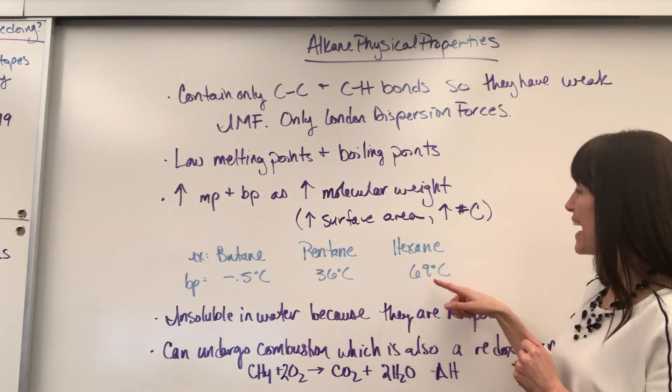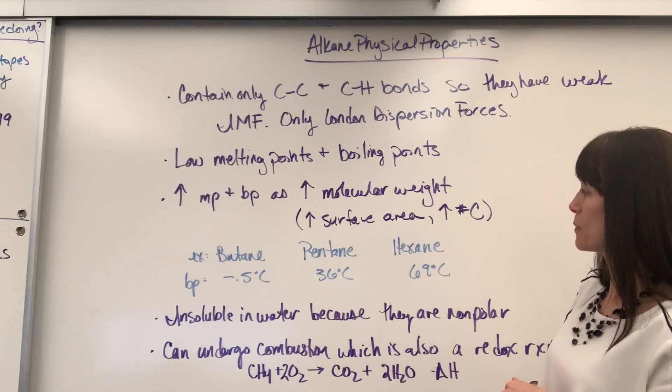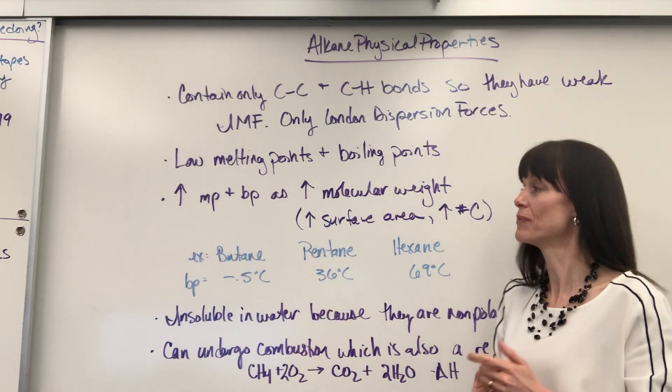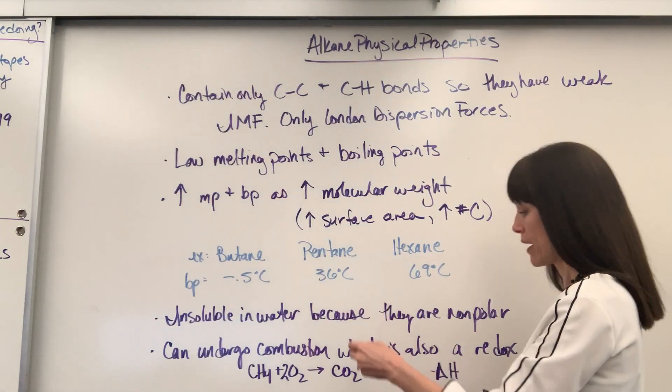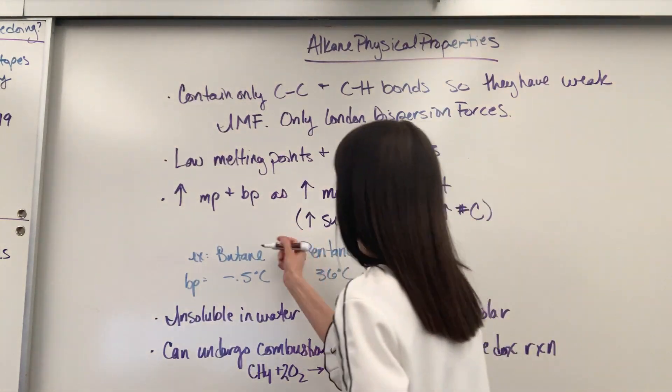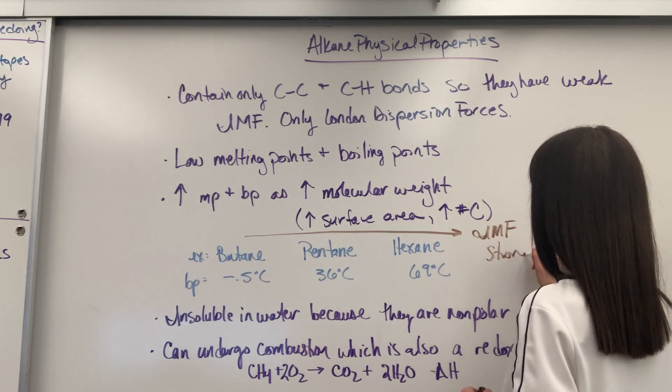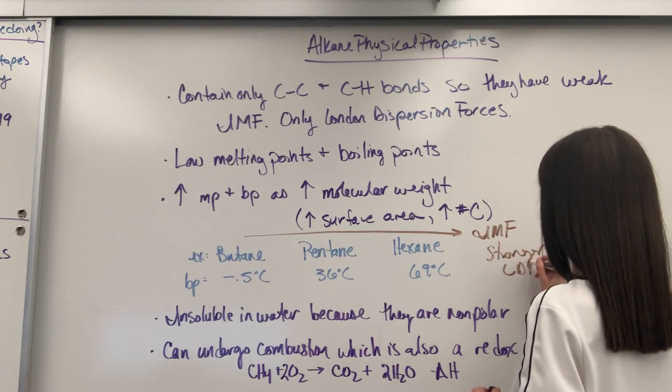And then six carbons. The boiling point for hexane is 69 degrees C. Because you have an increase in your IMF. You have stronger London dispersion forces, LDF.